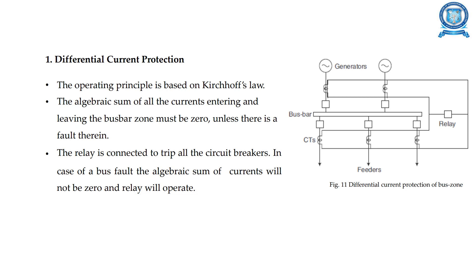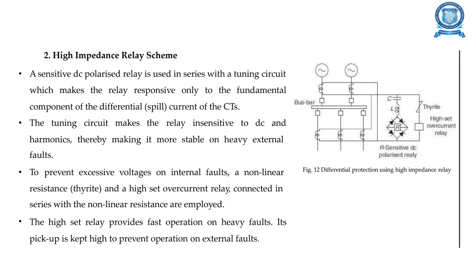As you can see in the diagram, there are generators, bus bars, current transformers, a relay, and feeders. This is the differential current protection of the bus zone. The relay is connected to trip all the circuit breakers. In the case of a bus fault, the algebraic sum of currents will not be zero and the relay will operate.